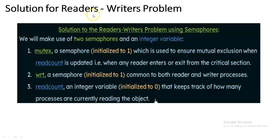The next semaphore is WRT. WRT is a semaphore which is going to allow the user to perform write operations. It is common for both reader and writer processes, but the WRT semaphore works differently in reader operation versus writer operation. We will see this in the algorithm in the next slide.